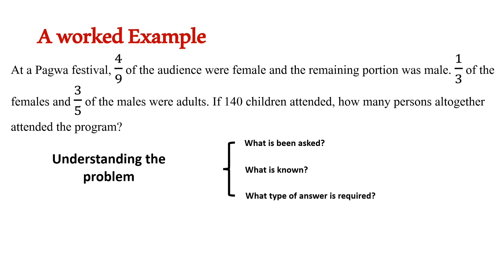Then you also ask yourself: what kind of answer is required? Is it a fraction, a decimal, or a percentage? We know that because we are dealing with people, we must get a counting number. It is also reasonable to assume the number is greater than 140, because there are 140 children and since both children and adults attended the festival, it is fair to say there are more than 140 attendees.